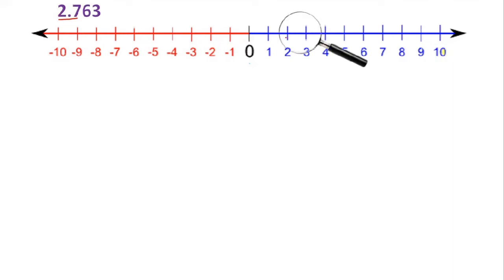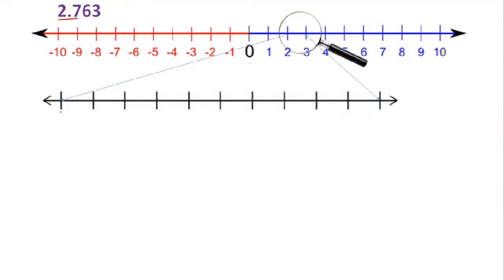Now divide the space between 2 and 3 into 10 equal parts. Imagine that you are having a magnifying glass and divide the space between 2 and 3 into 10 parts. It looks like this: after 2, that is 2.0, 2.1, 2.2, 2.3, 2.4, 2.5, 2.6, 2.7, 2.8, 2.9, then 3.